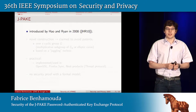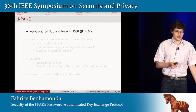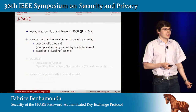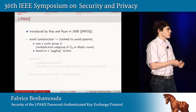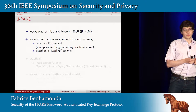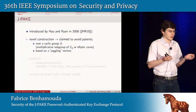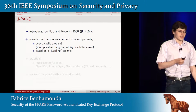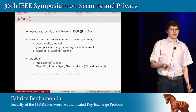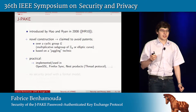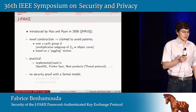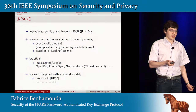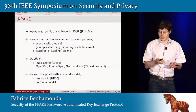So what is JPEG? JPEG is a PAKE introduced by Rao and Ryan in 2008. It's a novel construction which seems to avoid patents. The construction is over a cyclic group G — think an elliptic curve, or if you don't know elliptic curves, a multiplicative subgroup of Z_Q. It's based on the juggling technique, hence the name JPEG. It's practical — it has been implemented and used. But up to now, there was no security proof with a formal model; there was only some intuition in the original paper.